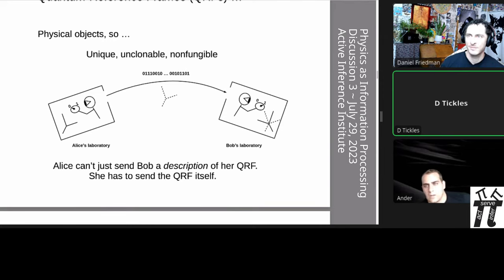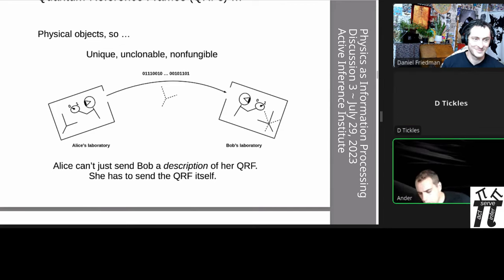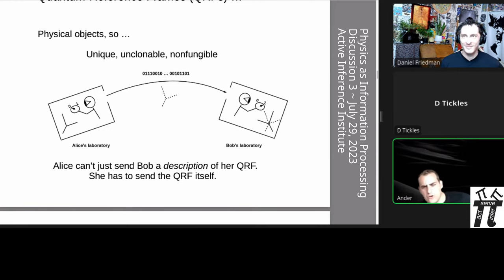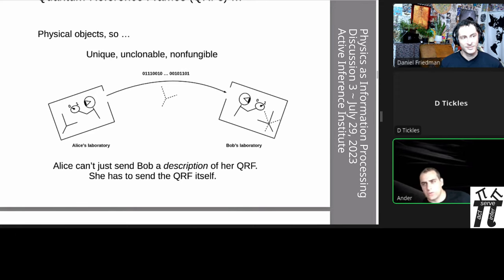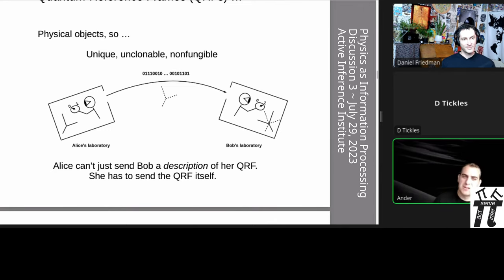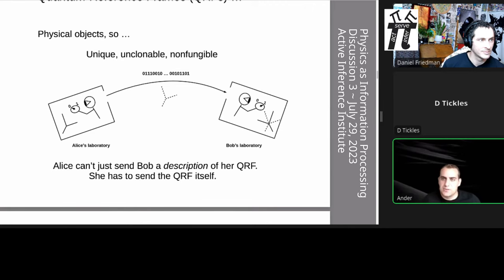I think we'll cover that towards the end of the talk. The big question in this lecture is: where is the tension between increasing complexity and wanting to predict what the environment is doing? One requires entanglement and the other requires separability — at least colloquially speaking. I think this tension is basically what the free energy principle comes down to.